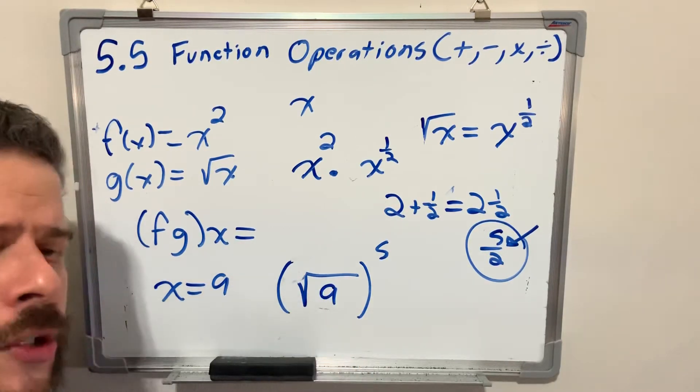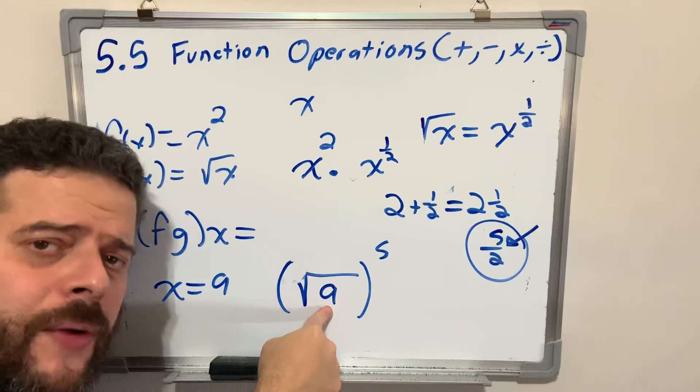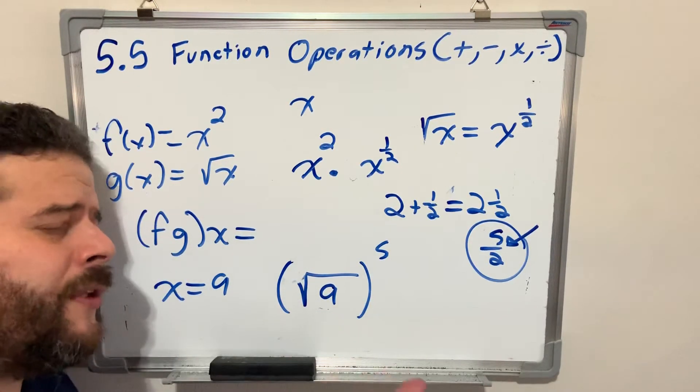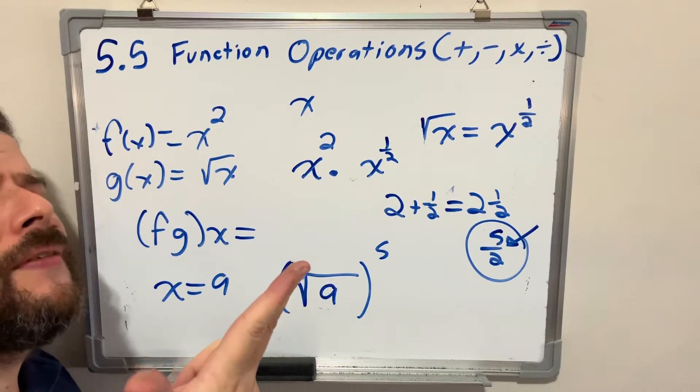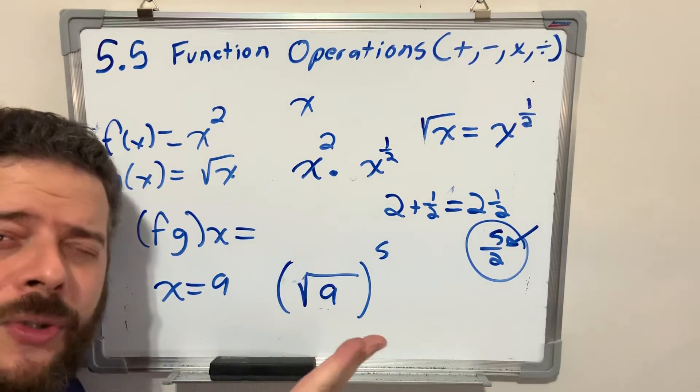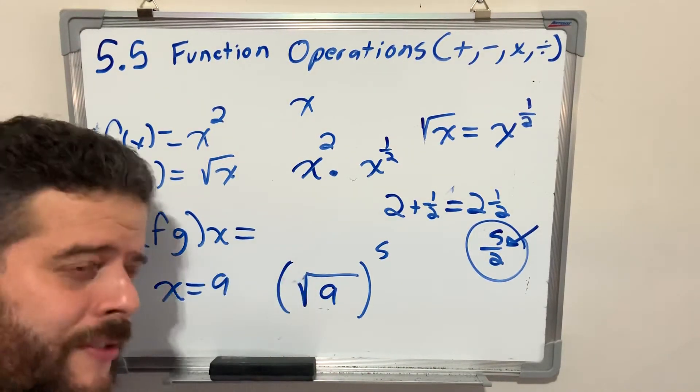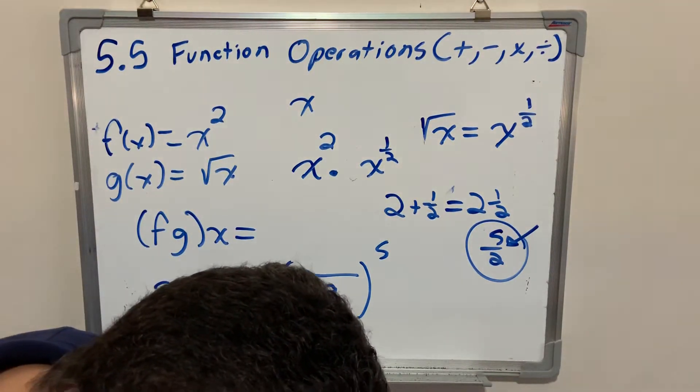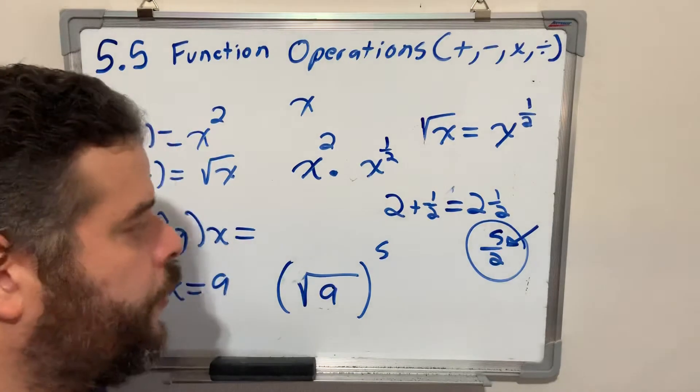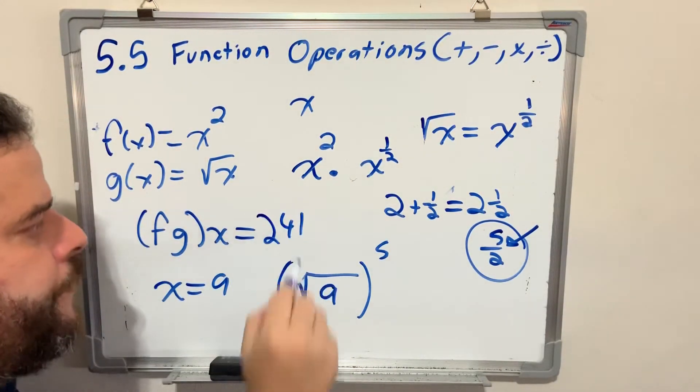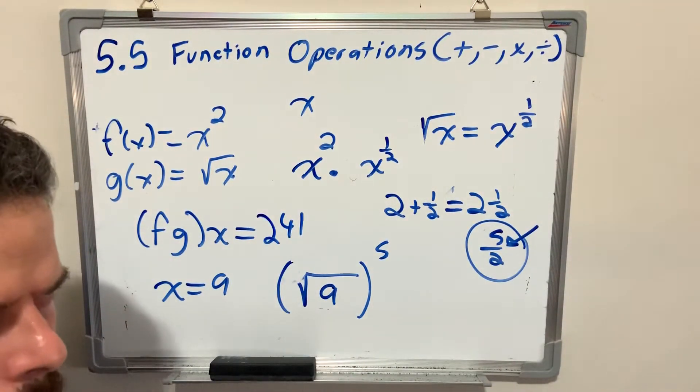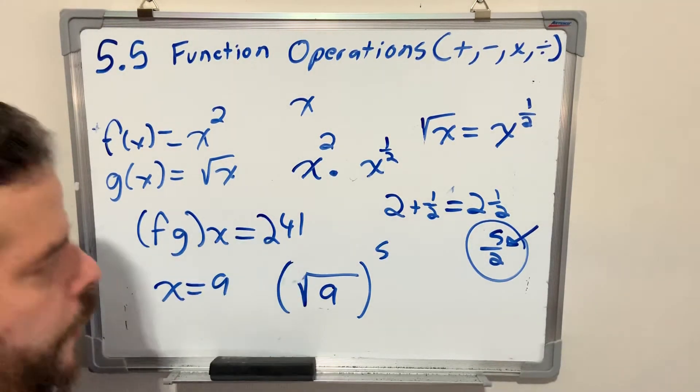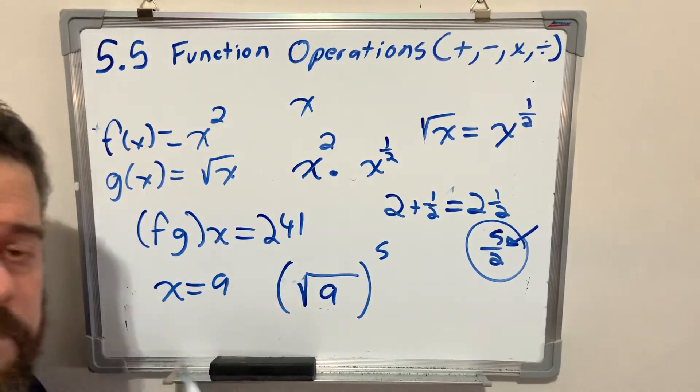I'm going to change my x for 9. Only use positives. Square root of 9 is 3. 3 to the fifth power. 3 times 3, 9 times 3, 27 times 3, 81 times 3, 243. I think I multiplied an extra time. 243. That's the answer.